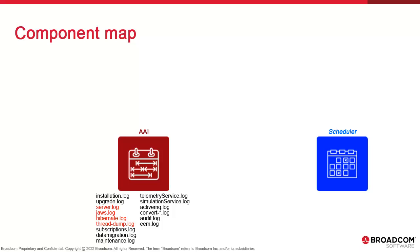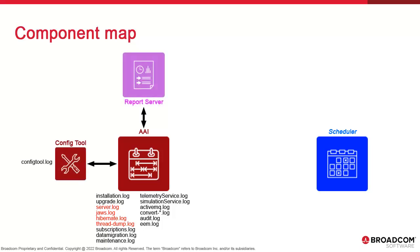Hibernate.log logs connection attempts between the server and both AI and scheduler databases. Other logs have their use based on the context. For example, if you need to audit individual import-export processes for backup purposes, you can use datamigration.log. The config tool has one log, configtool.log. The reporting server relies on Apache technology, and so logs are found in the Tomcat directory.